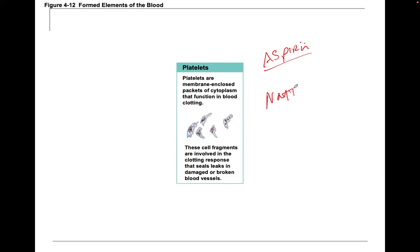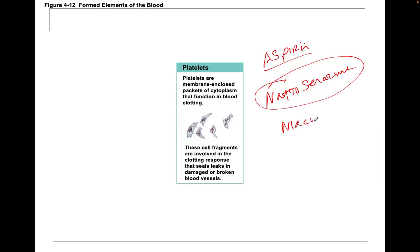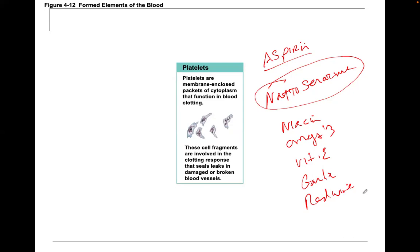Natural blood thinners include natokinase — which became very prominent after COVID because of clotting proteins — niacin, omega-3s, vitamin E, garlic, and red wine or resveratrol. All of these are effective at keeping the blood nice and thin. The liver can recognize nattokinase and it is not toxic.